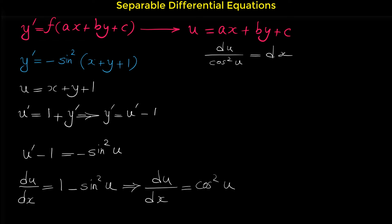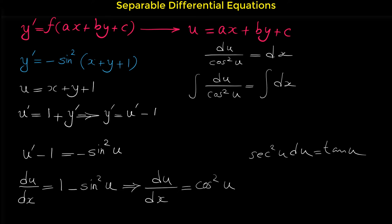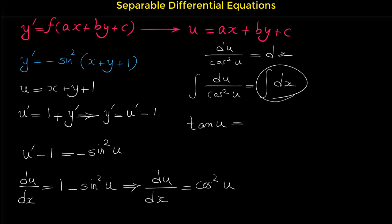For solving this equation, we have to integrate both sides. Note that for finding the integral of du over cosine squared of u, 1 over cosine squared is secant squared, because secant is 1 over cosine. And we know from the integral formulas that the integral of secant squared is tangent of u. So the integral of the left side is tangent of u, and the integral of dx is x. Don't forget to add the constant c.